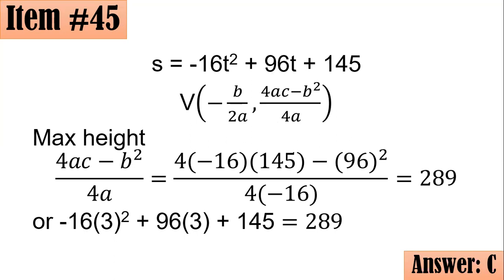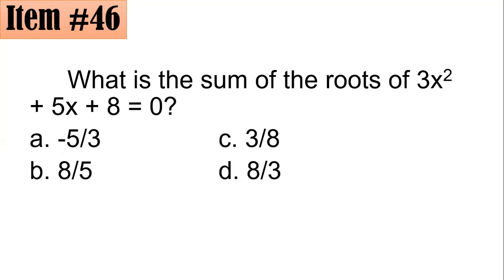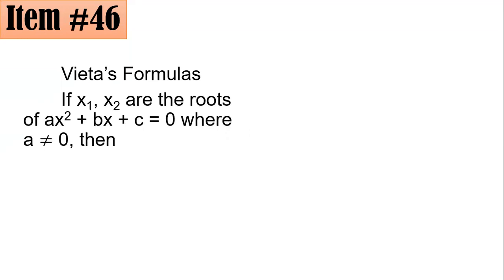Next one. What is the sum of the roots of 3x squared plus 5x plus 8 equals 0? So this is written in standard form, equals 0. Is it negative 5 thirds, 8 thirds, 3 eighths, or 8 thirds? We can see from here, if you could recall Vieta's formulas, actually, Vieta's formulas is helpful for the sum and product of roots. That is, if x sub 1 and x sub 2 are the roots of the quadratic equation in standard form, ax squared plus bx plus c equals 0, where your leading coefficient a is not equal to 0, then the sum of the roots is simply negative b over a. And the product of the roots is, or x sub 1 times x sub 2, is c over a.